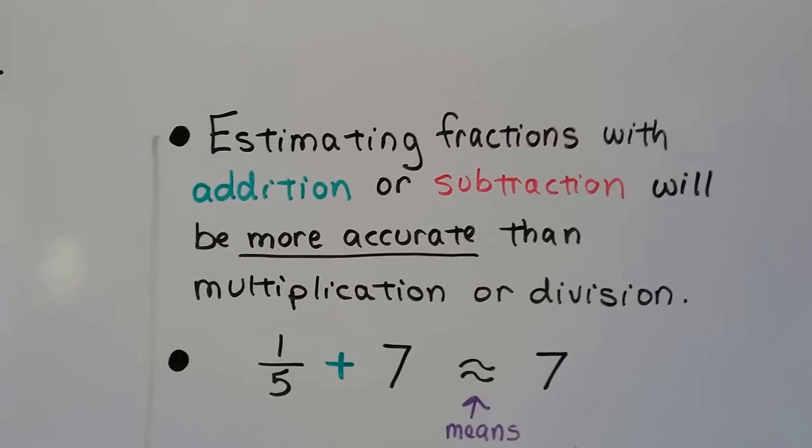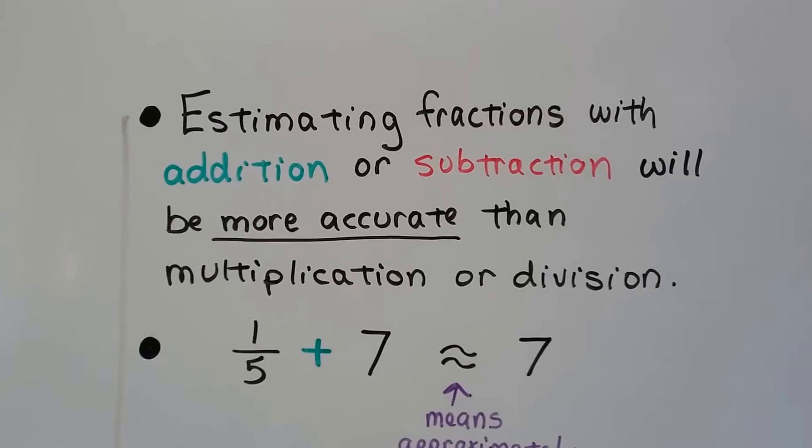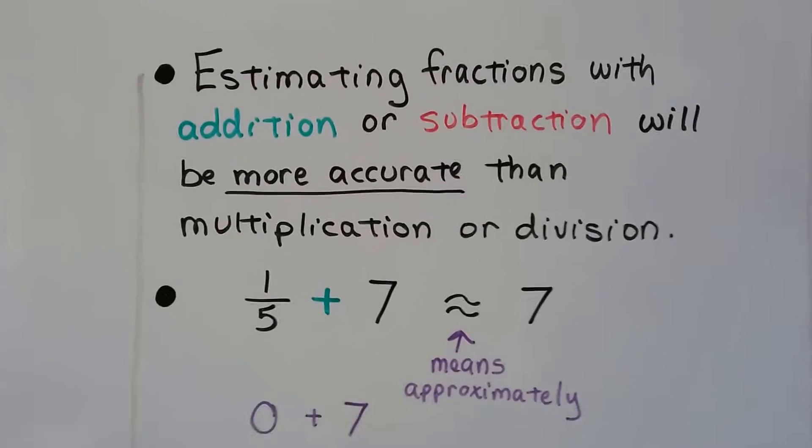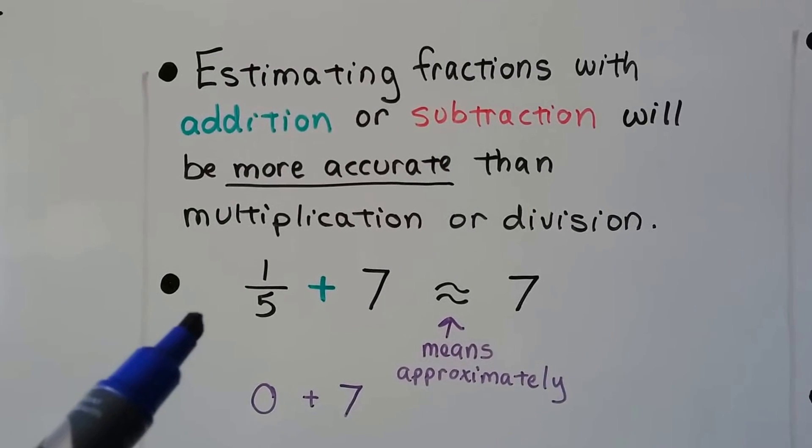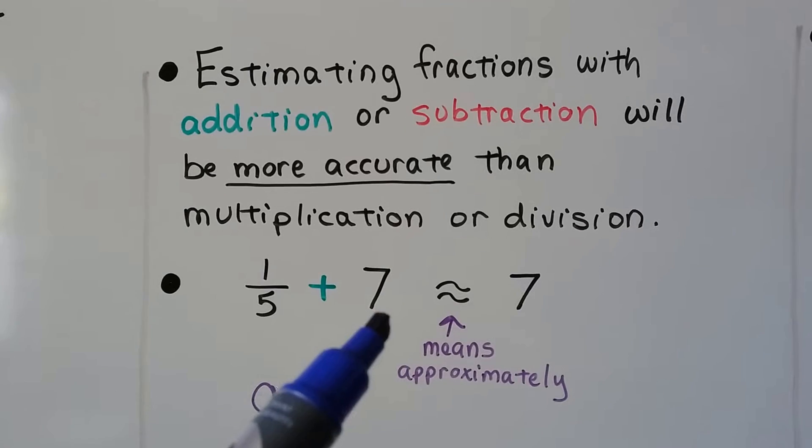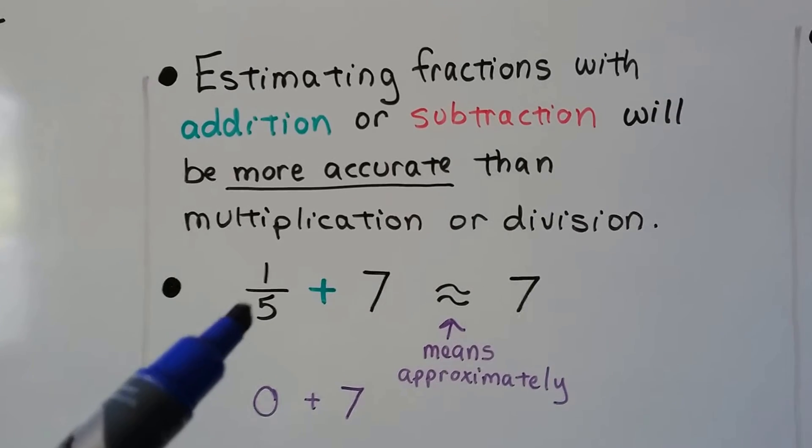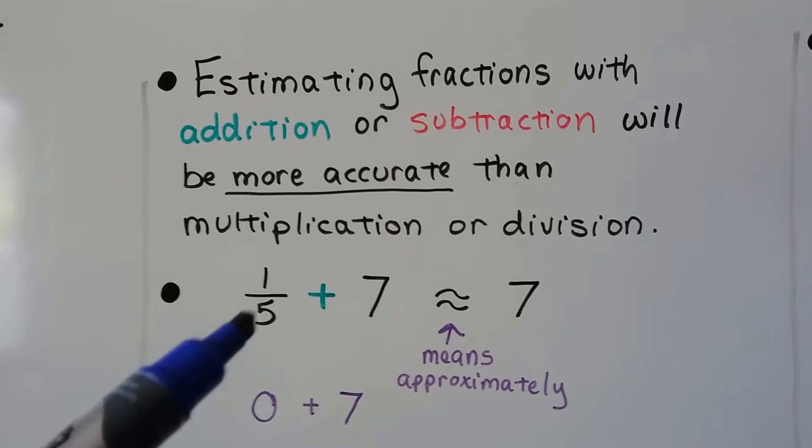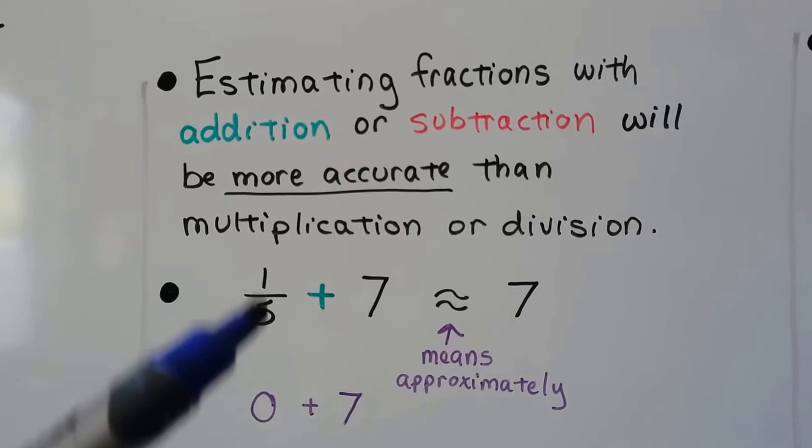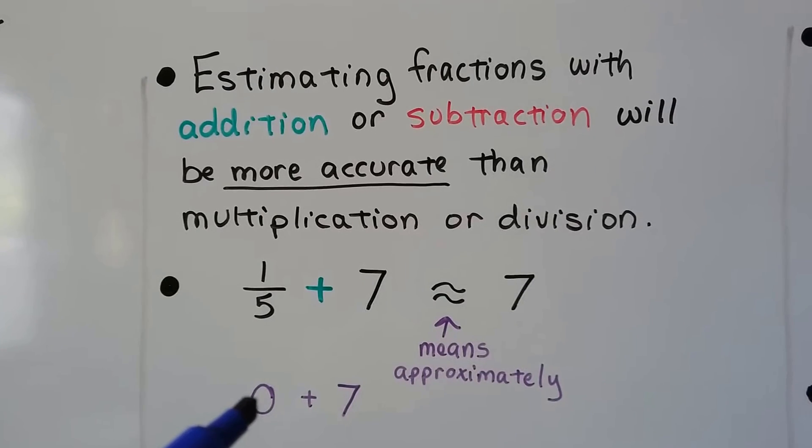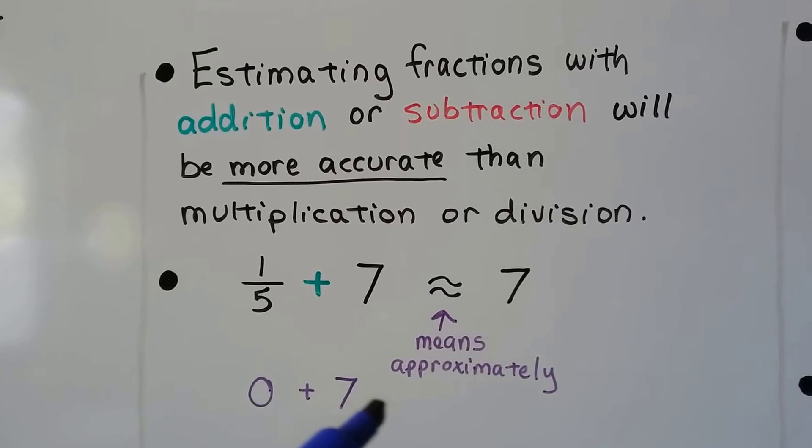Estimating fractions with addition or subtraction will be more accurate than multiplication or division. Take a look at this. If we have 1 fifth plus 7, the 1 fifth is very tiny. The 1 is not more than half of 5, so we would round that to 0 plus 7.